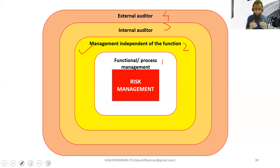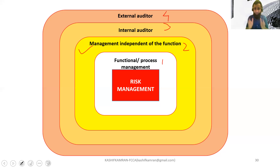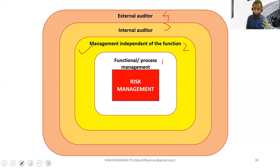The third line of defense is the internal auditor or internal audit department. They need to carry out an extensive internal audit exercise right across the organization, ensuring every function, process, control activity, and policy is being adhered to and implemented. The internal auditor finds weaknesses and loopholes and communicates them, providing a holistic review of the entire organizational risk management system.